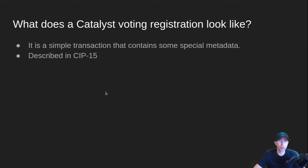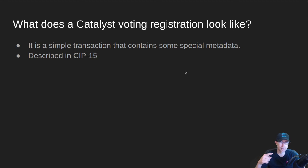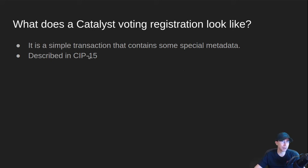So what does the voting registration transaction actually look like? It's a very simple dust transaction. You're sending ADA out of your wallet and right back to your wallet, so all you're spending is a transaction fee. It's described in CIP-15 if you want to dig deeper into it.